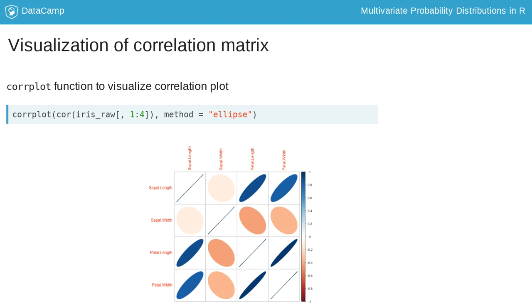For example, a very high positive correlation between petal width and petal length is represented by the thin, right-tilted, dark blue ellipse. In contrast, the circle-like shape representing the correlation between sepal width and length signifies a small correlation between the corresponding variables.